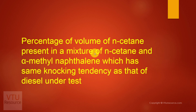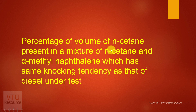N-Cetane is a straight chain hydrocarbon and it is an ideal fuel. When N-Cetane was used as a fuel in a diesel engine, the knocking tendency was very very less. Therefore, the cetane number of N-Cetane was arbitrarily fixed as 100. Alpha-Methyl-Naphthalene is an aromatic hydrocarbon.